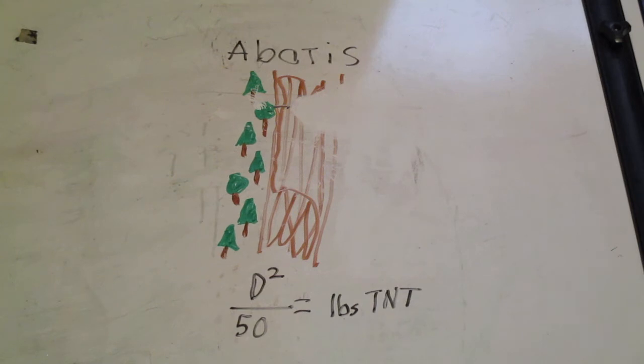Typically if you come across an abatis, if you're the one that comes across it and the enemy put it in front of you, you backtrack and try to find a bypass around it, another road off of this one that goes around it.